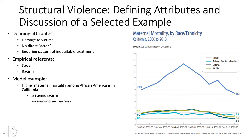Additionally, structural violence will result in damage to its victims, even if they are unaware of their victim status, and it does so through this enduring pattern of inequitable treatment. For example, we can look at the continued presence of social inequities such as sexism and racism as broad examples of manifestations of structural violence.